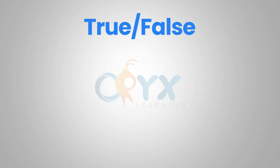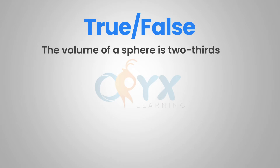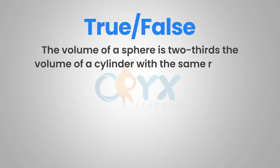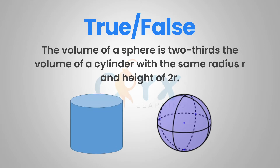True or false: the volume of a sphere is two-thirds the volume of a cylinder with the same radius r and height of 2r. If you'd like to find out the answer to this question, please follow along and we'll revisit it at the end.